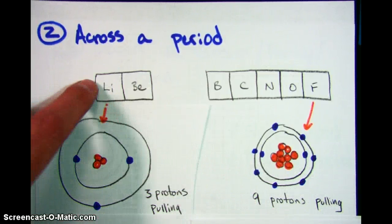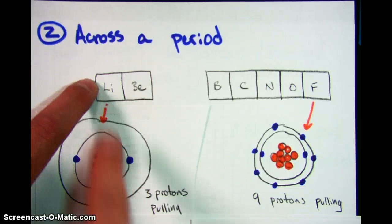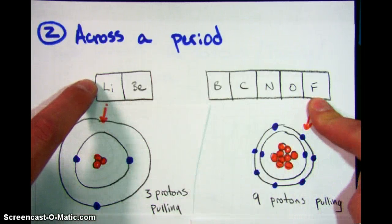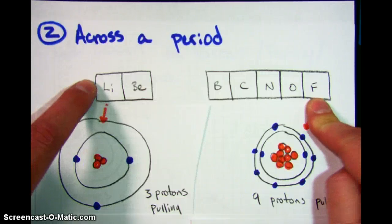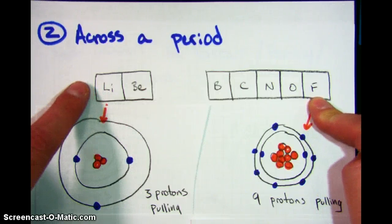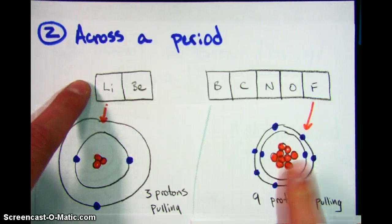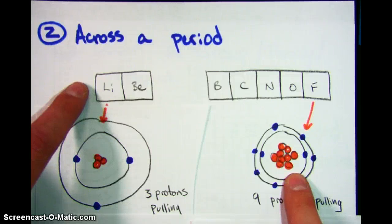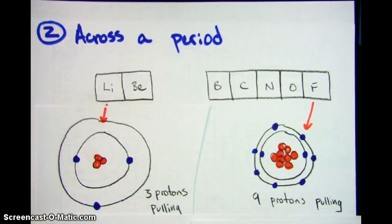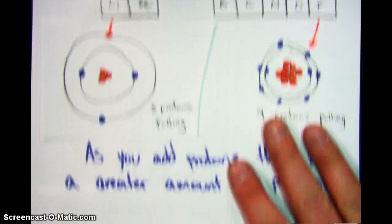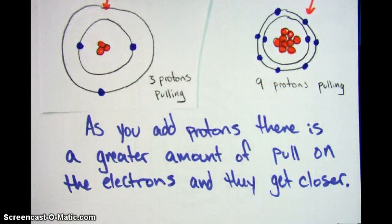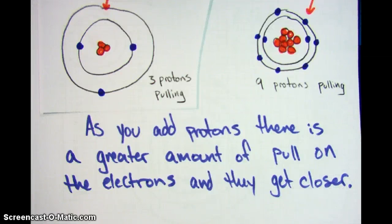It's a little bit counterintuitive. You might be thinking: if you're adding electrons and protons as you're going across, that sounds like a bigger atom — but it's not. Those protons and electrons are actually pulling way harder on each other, which means it's being sucked in and closer together. So in summary, as you add protons, there's a greater amount of pull on those electrons and they get closer to the nucleus.